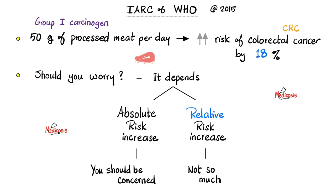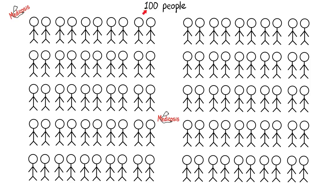For if this 18% increase were an increase in absolute terms, you should be very concerned. But in relative terms, not so much. Let me explain. Suppose that we have 100 individuals — everyone is different, unique, and amazing.